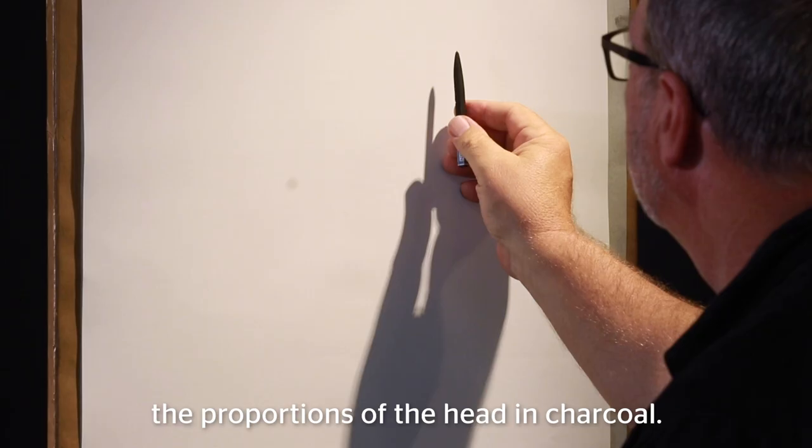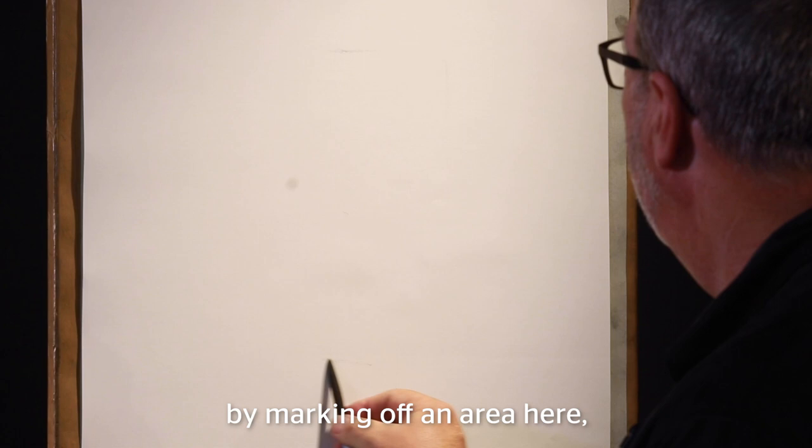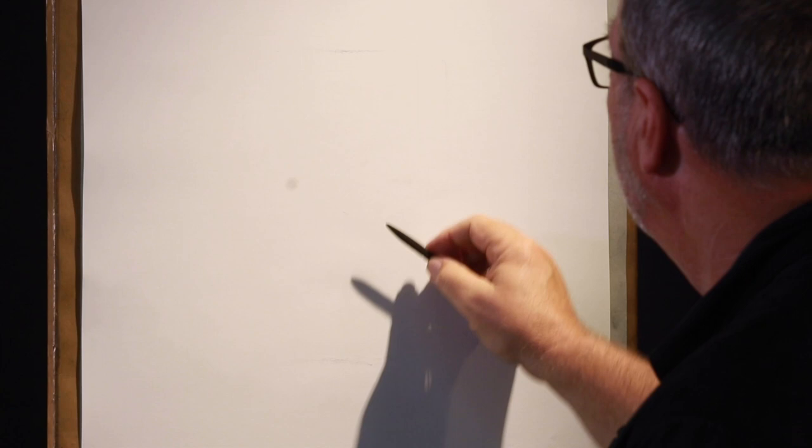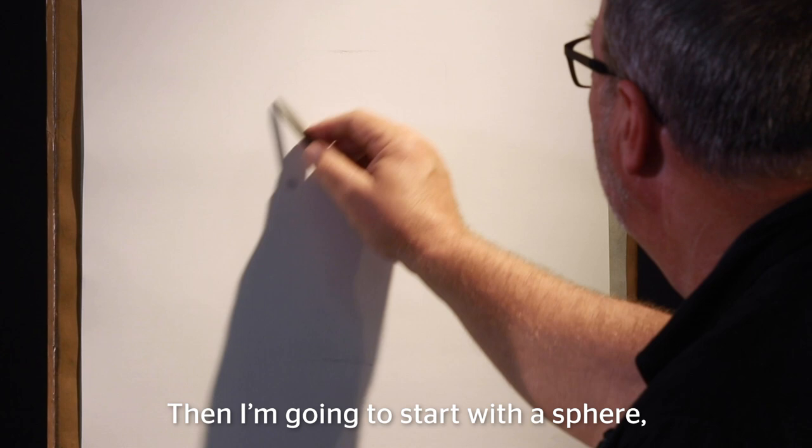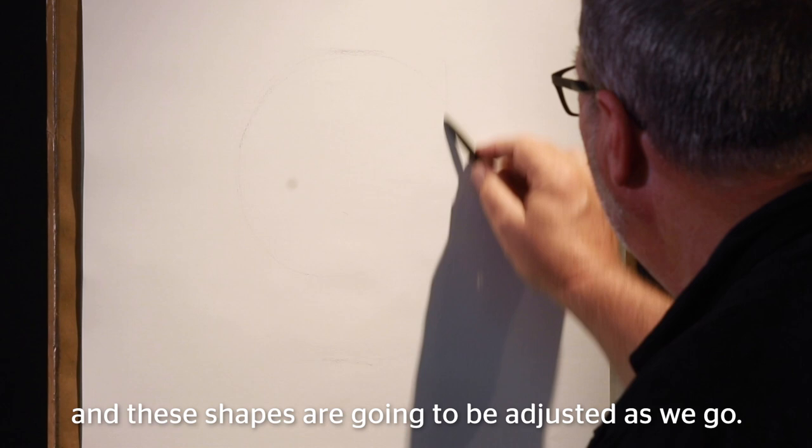Okay, so I am going to start by marking off an area here, top and bottom of the head. And I'm going to start with a sphere. Now these shapes are going to be adjusted as we go, and so I'm going to keep the lines light.